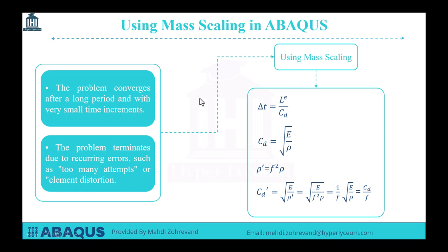Considering that our simulation is quasi-static, we can change the density value and multiply it by a coefficient. However, at the end of the simulation, we should examine whether this coefficient applied to the material's density has affected the results and caused any disruptions. Our goal is to increase the time increment by using mass scaling, and as a result, we can solve the problem faster with less calculation cost.